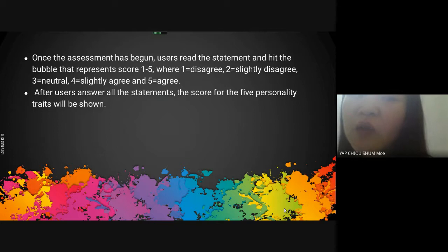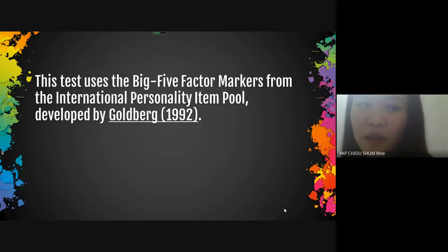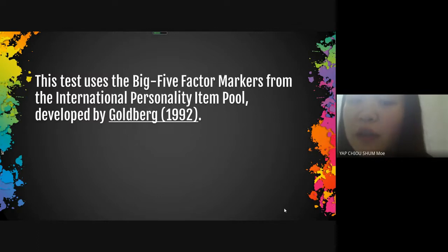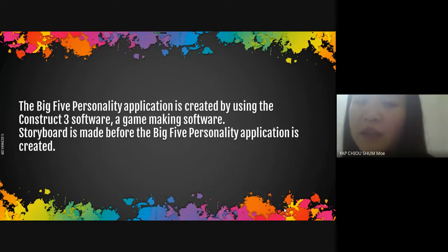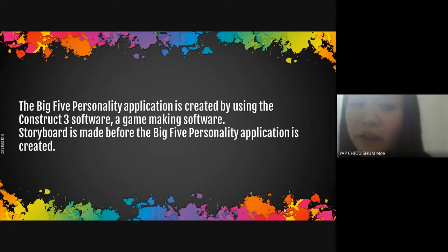After users answer all the statements, the score for the five personality traits will be shown. This test uses the Big 5 Factor Markers from the International Personality Item Pool, developed by Gobert in 1992. The Big 5 personality application is created using the Construct3 software, a game-making software, and a storyboard was made before the application was created.